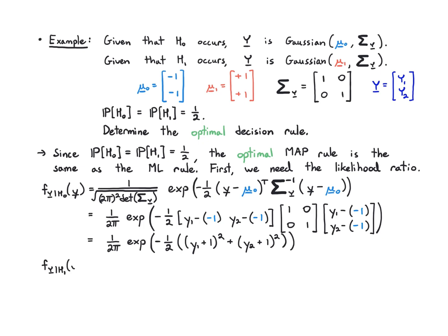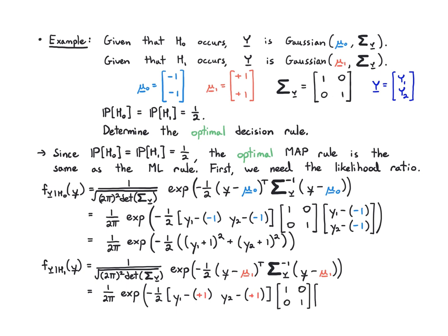I'm going to see a very similar calculation when I work out the conditional probability under H1. The constant in front is going to be exactly the same. I'm going to have exp minus 1 half y vector minus mu 1 vector transpose times the inverse covariance matrix y vector minus mu 1 vector. This is going to be equal to 1 over 2π, exp minus 1 half times y1 minus plus 1, y2 minus plus 1 as a row vector because we took the transpose. The inverse of identity is just identity and then y1 minus plus 1, y2 minus plus 1 as a column vector.